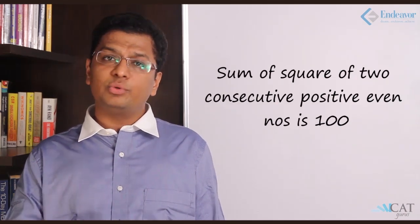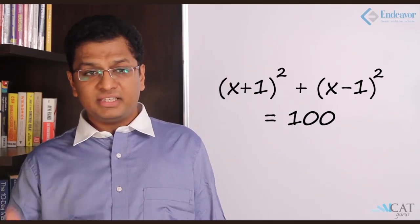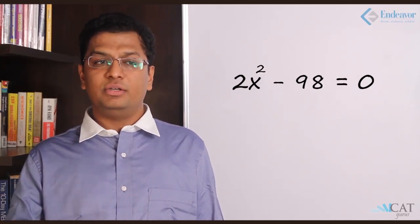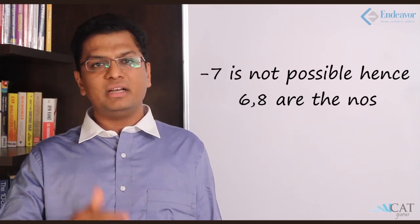Let us take another example. The sum of the squares of two consecutive positive even numbers is 100. Even numbers can be taken as x - 1 and x + 1, so that x is an odd number and both x - 1 and x + 1 are even numbers. So (x + 1)² + (x - 1)² = 100. Solving this we get 2x² - 98 = 0, giving x = 7 and x = -7. Since the question asks for positive even numbers, -7 is not an option, so the numbers are 6 and 8.